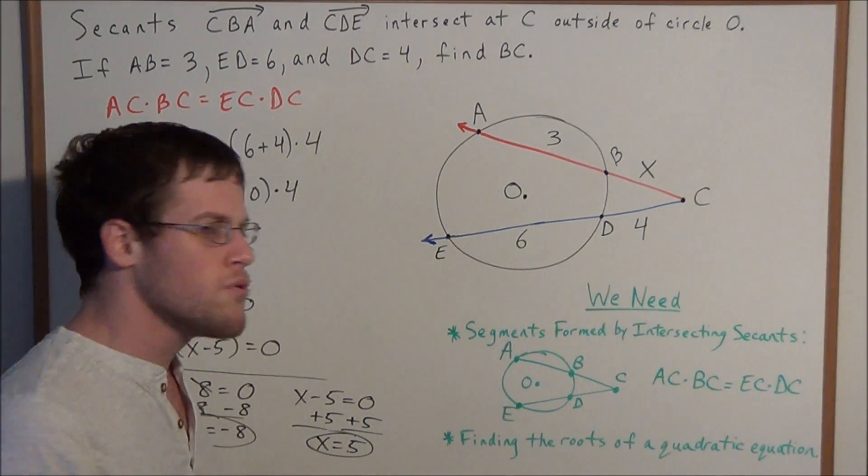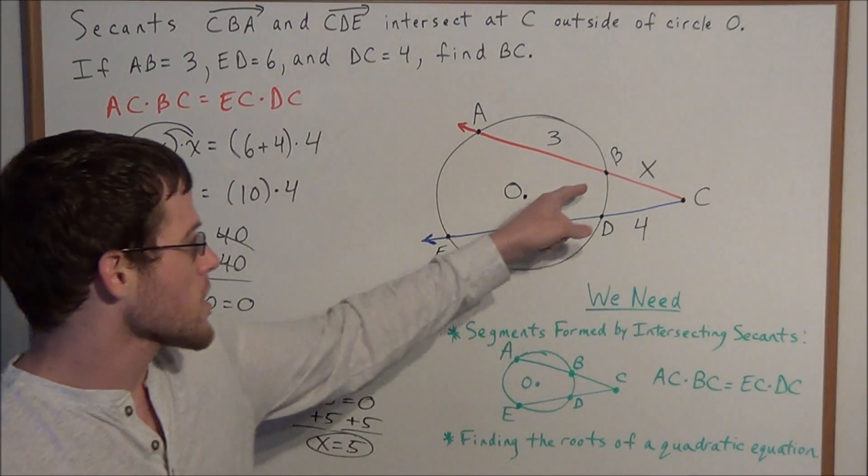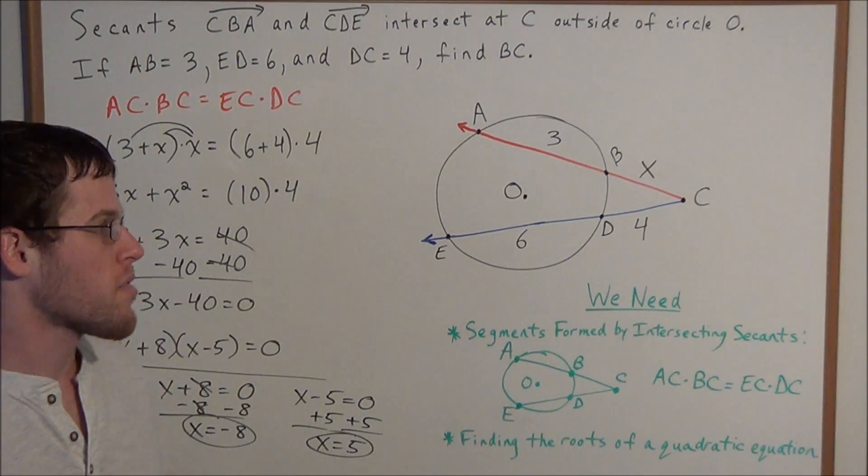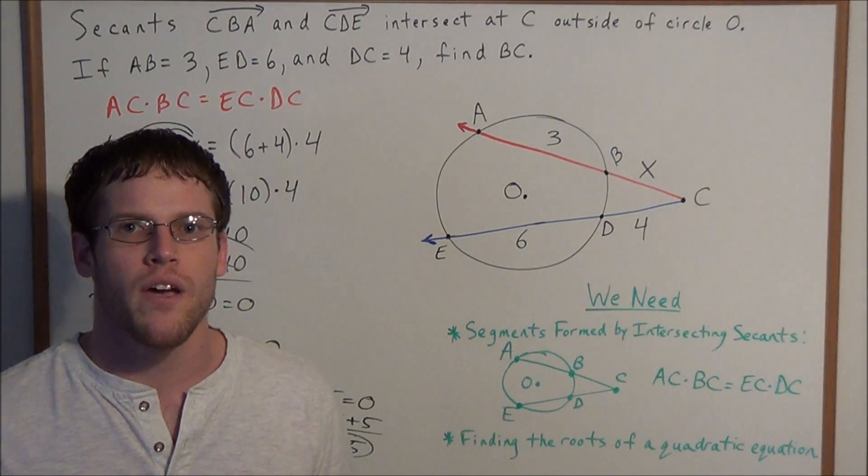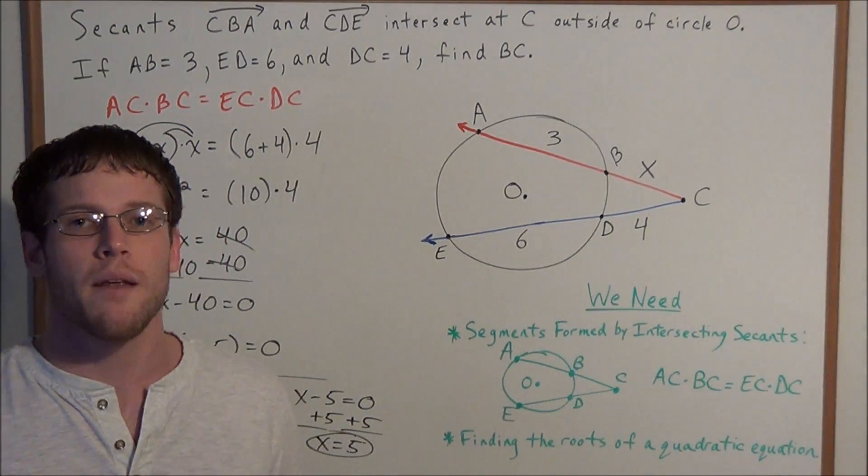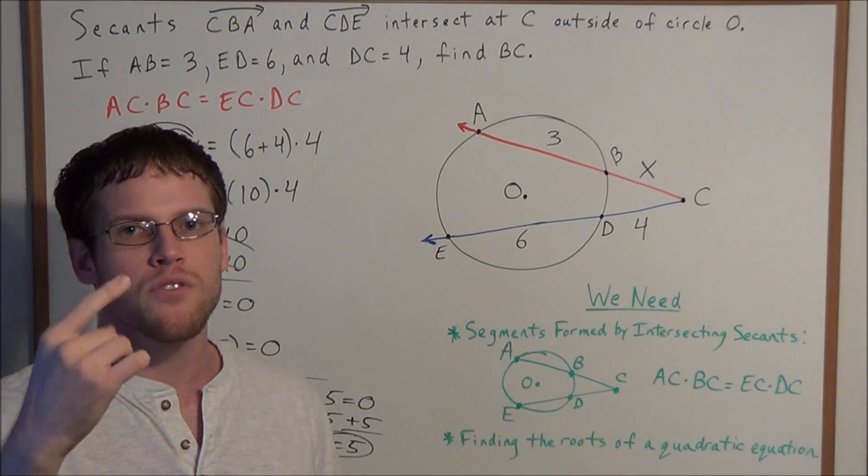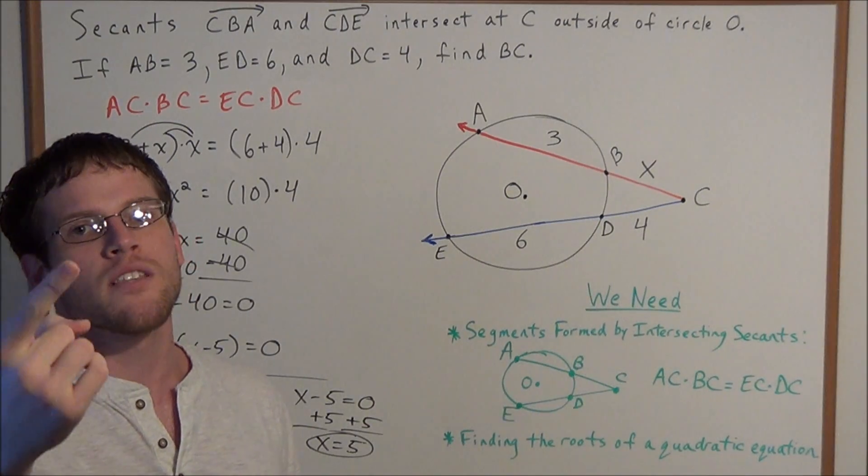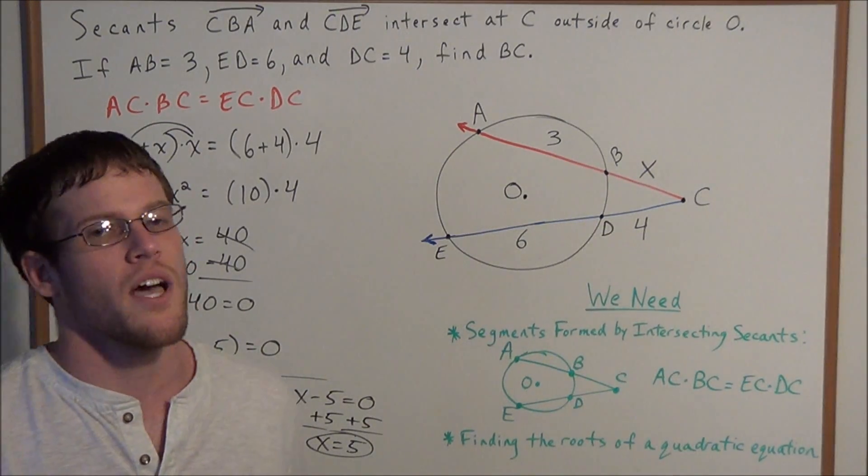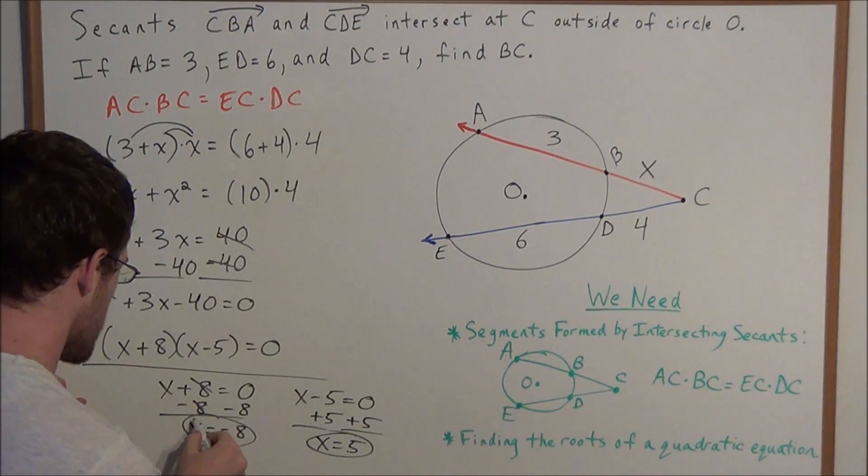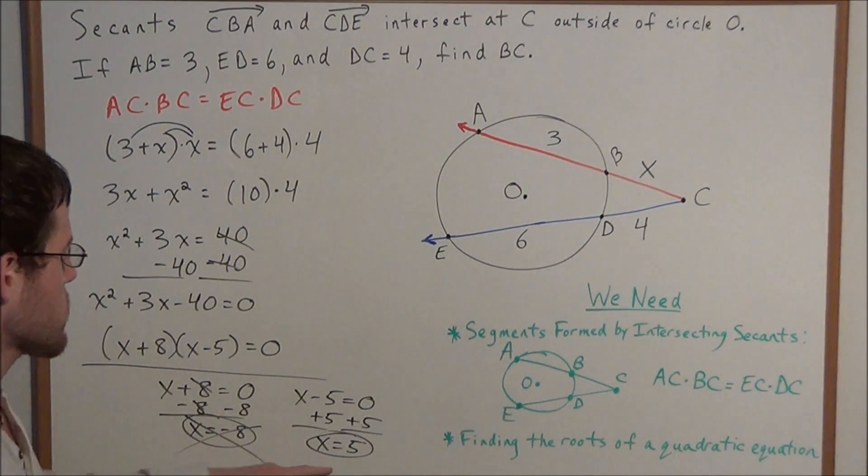But now we need to analyze our two possible answers. We have the length of BC equals X. Can the length of BC be negative 8? No. In our three-dimensional world, we can't have negative distance. The distance from you to your computer screen, let's say it's 3 feet, but the distance from your computer screen back to you is not negative 3 feet, it's still 3 feet. So we reject negative distance and our answer is X equals 5.